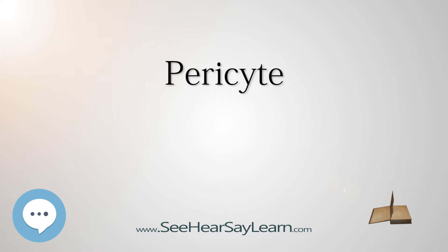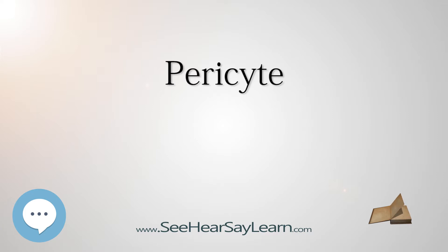Hemangiopericytoma is a rare vascular neoplasm, or abnormal growth, that may either be benign or malignant. In its malignant form, metastasis to the lungs, liver, brain, and extremities may occur. It most commonly manifests itself in the femur and proximal tibia as a bone sarcoma, and is usually found in older individuals, though cases have been found in children.